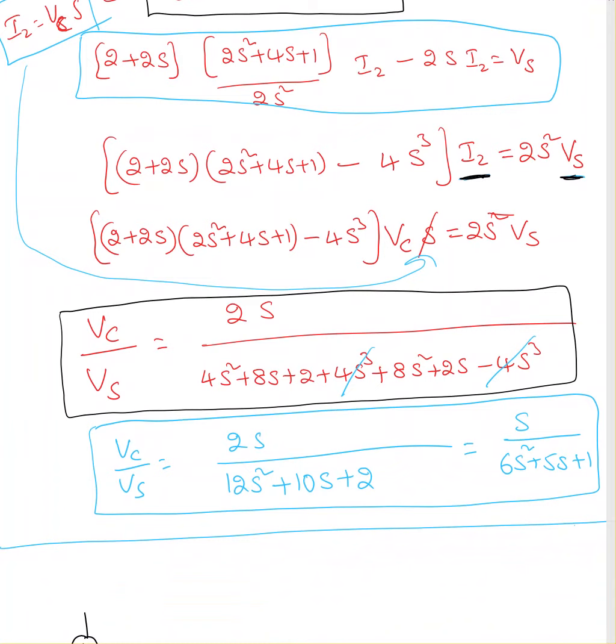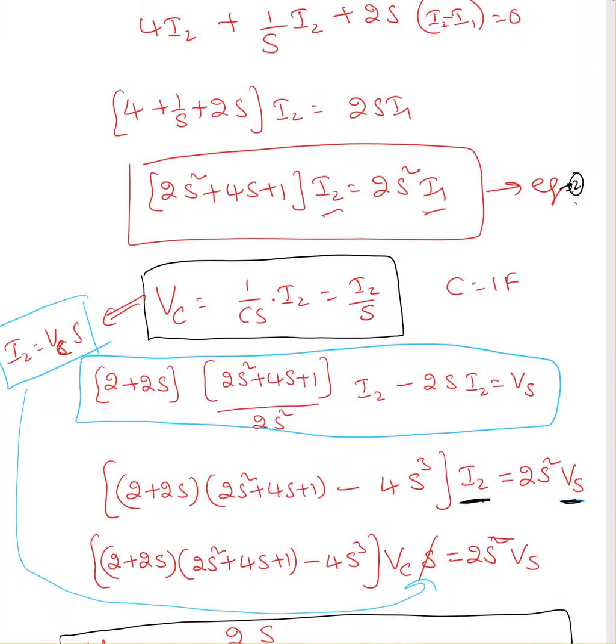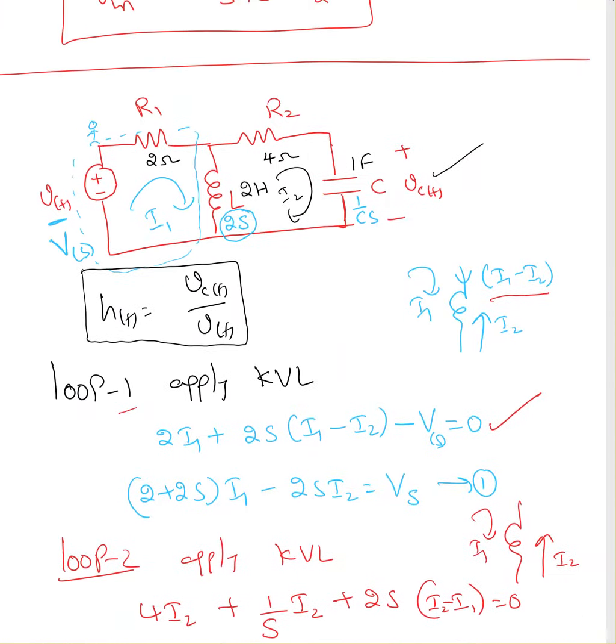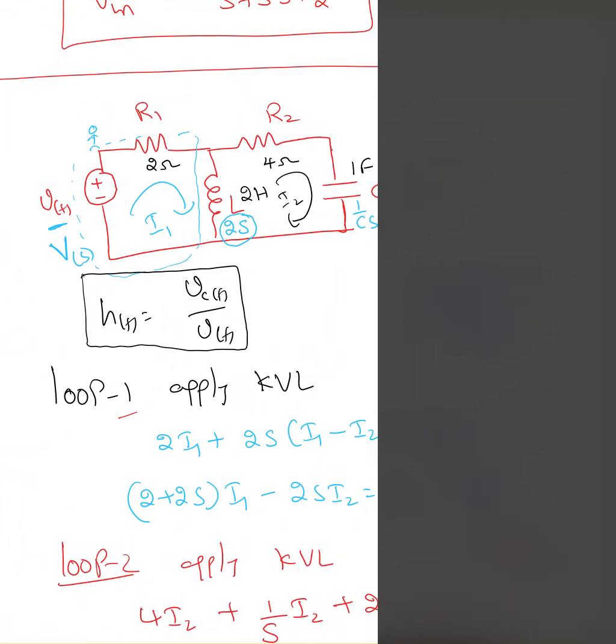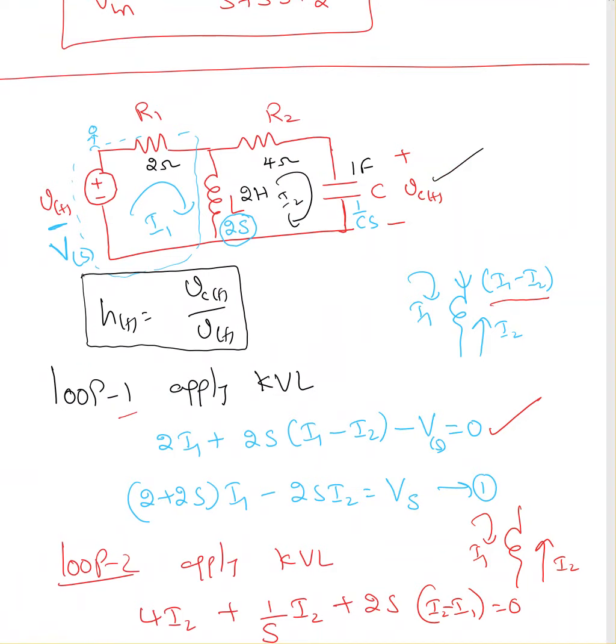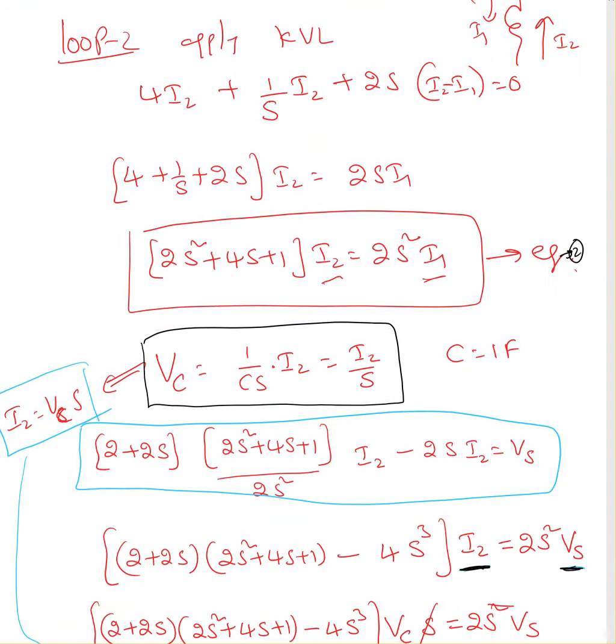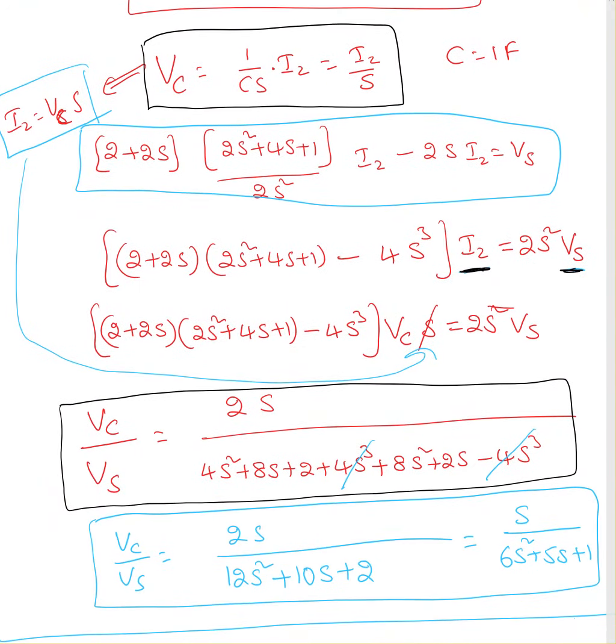So for any circuit, you don't need to have a unique transfer function. Say, for example, if I want voltage across this R2 as my output voltage, now the transfer function is going to change. I will stop this example here. Continue another example in the next video. Thank you.